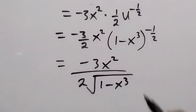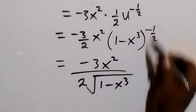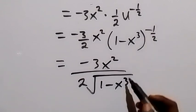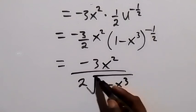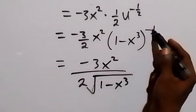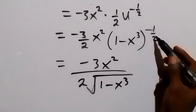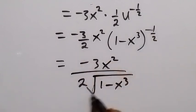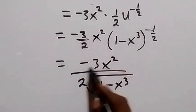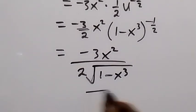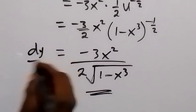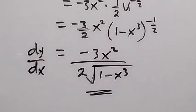Here, raised to power minus half gives us the reciprocal — the term comes to the denominator — and raised to power half is the same as square root. So we have applied the negative exponent as reciprocal and the half power as the square root. The final answer is minus 3x squared over 2 root 1 minus x cubed. Thank you for watching — don't forget these steps. Subscribe to my channel and turn the notification bell on. See you in the next class, bye for now.